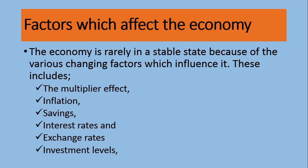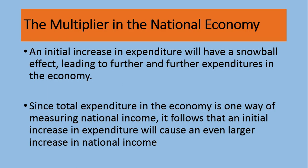Some of these variables include the multiplier effect, inflation, savings, interest rates, exchange rates, and investment levels. The multiplier — as the name suggests — is something that multiplies. An initial increase in expenditure has a snowball effect, meaning it keeps on growing. Just as a snowball rolling downhill gets bigger and bigger, when the government spends one dollar, that spending keeps multiplying and can have an effect on the national economy at multiple times its original value.